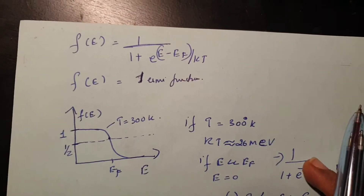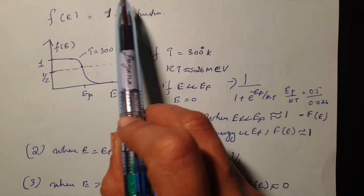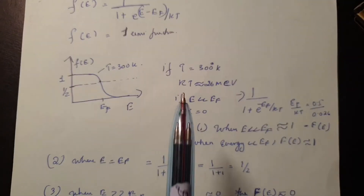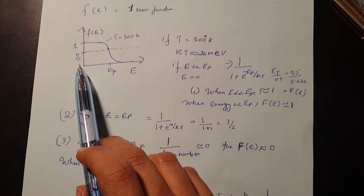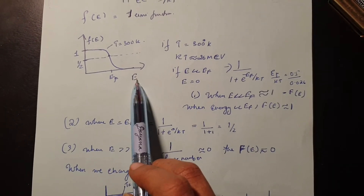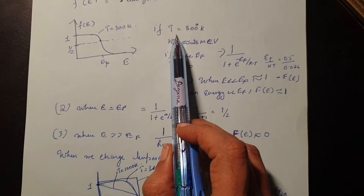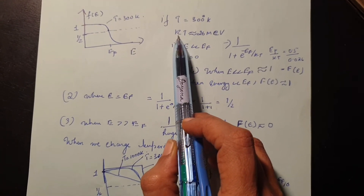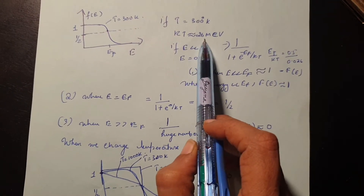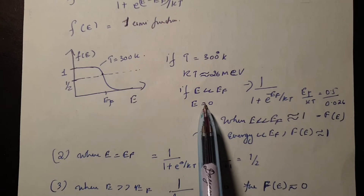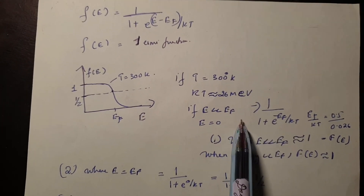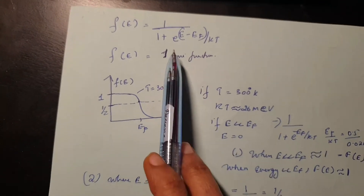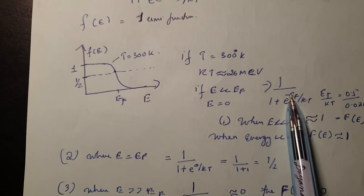Now if we plot the Fermi function as a function of energy E (previously noted as Es for state S), at a temperature of 300 K, multiplying the Boltzmann constant k by temperature gives approximately 26 meV. We can analyse two cases: first, when E is much less than E_F.